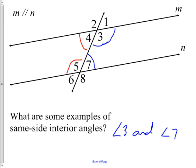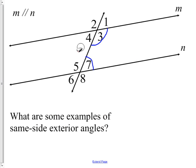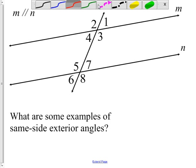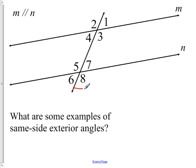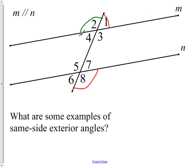Same side exterior angles are on the same side of the transversal, just like same side interior, but they're outside the parallel lines. So they're on the same side but on the outside. Examples would be like angles eight and one, or angles two and six — those are same side exterior angles.